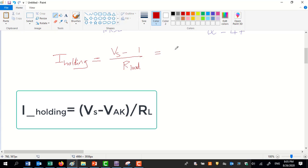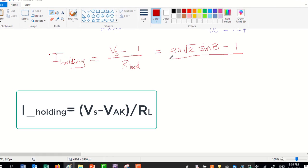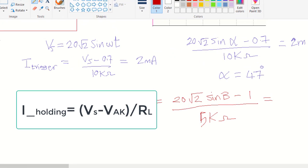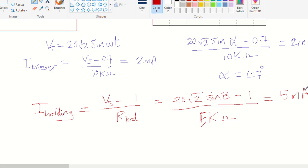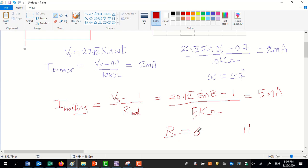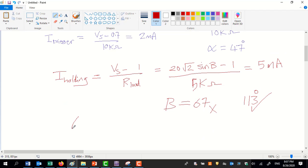To find beta, we use holding current and load circuit. The load voltage is going to be 1 volt less than the source voltage because the drop voltage across the thyristor is 1 volt. Solving this equation beta 113.